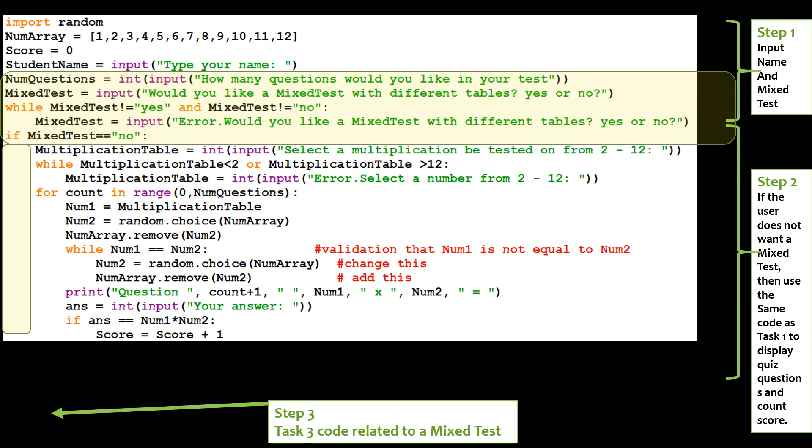And finally, if mixed test is equal to no, because it's an if statement, we're going to tab and copy paste the same code that we had from task 1 that's related to having a test, for example, about the multiplication table 5. Okay, except that this time we're going to have the number of questions that the student or the user has specified. So that was the code for step 1.